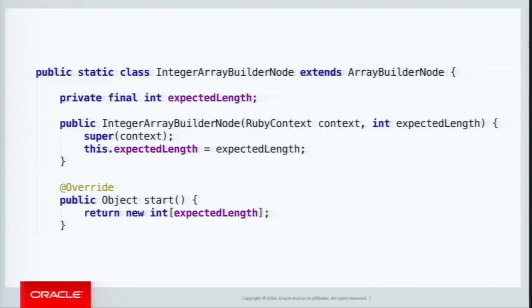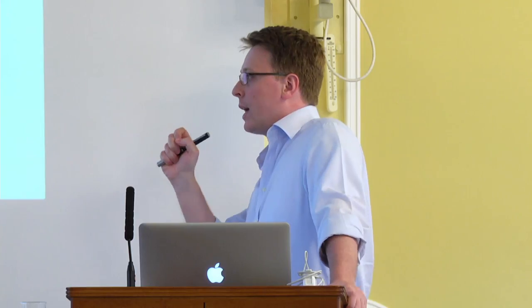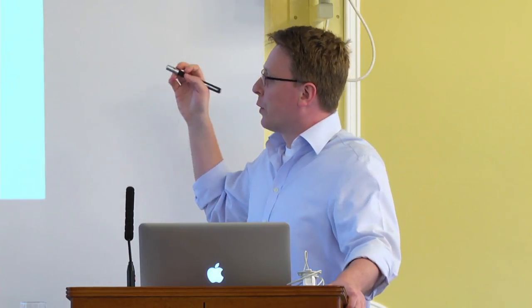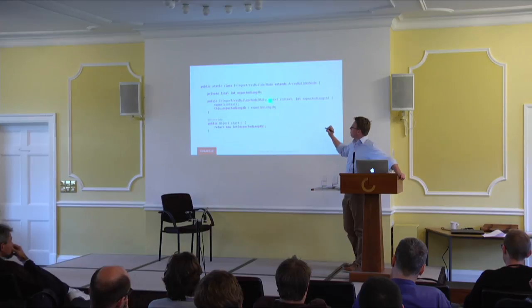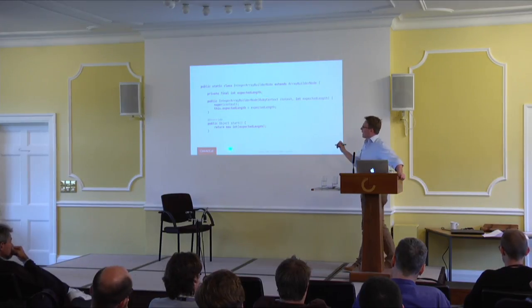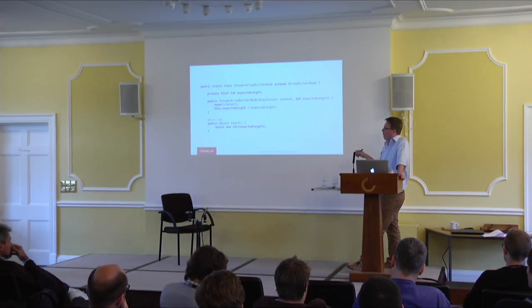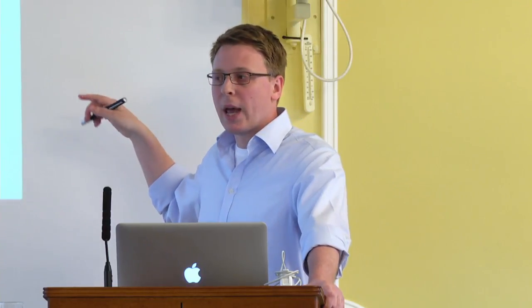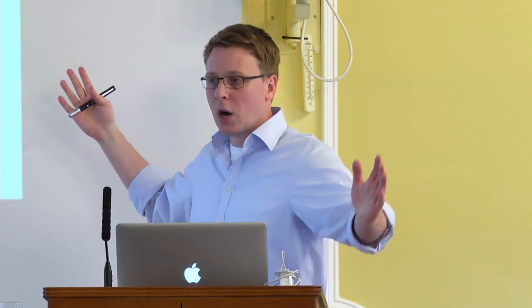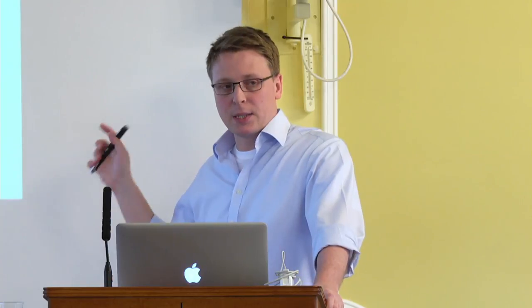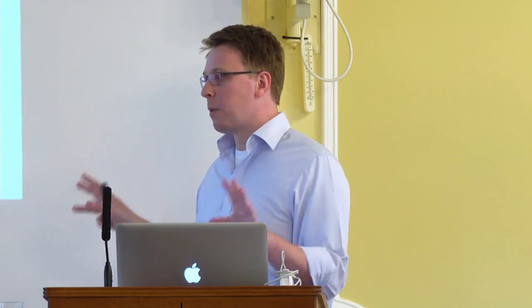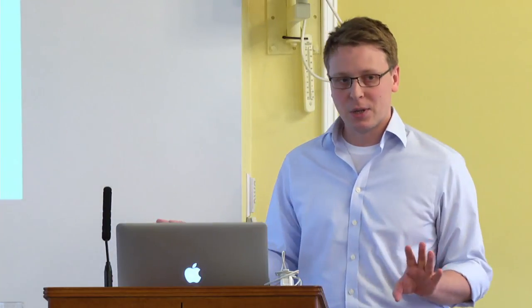We can use Truffle node state for other things too. This integer array builder node helps build up arrays and stores the expected length of the array as a field. When allocating the array initially we give it that expected length, and if it turns out to be larger, next time we create it with that extra space from the start. We can also cache allocation strategies — for example, storing a link back to the allocation site node and telling it the object lives a long time so it should be allocated in the old generation. Any kind of state you want is an open field.